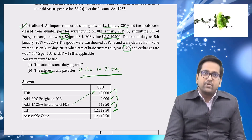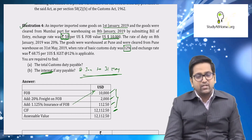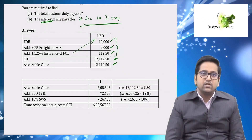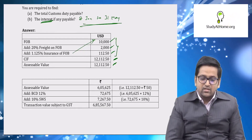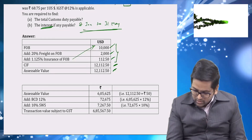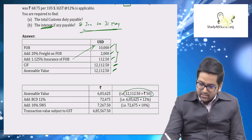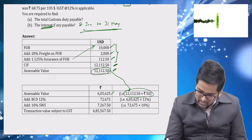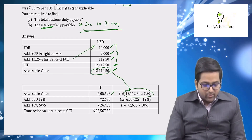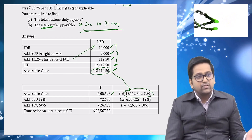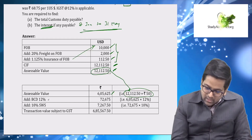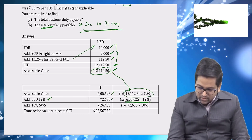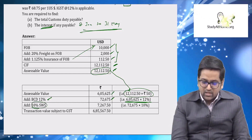FOB plus freight plus insurance gives CIF, and CIF is your assessable value. This assessable value is in US dollars. To convert to Indian rupees, multiply by the exchange rate of ₹50. So assessable value = ₹6,05,625. Now the rate of BCD to be applied is 12 percent — the rate on the date goods were cleared from the warehouse. So 12 percent of ₹6,05,625 = ₹72,675.